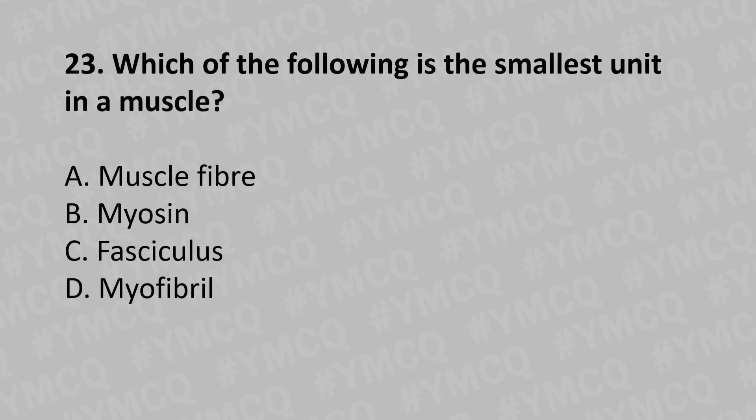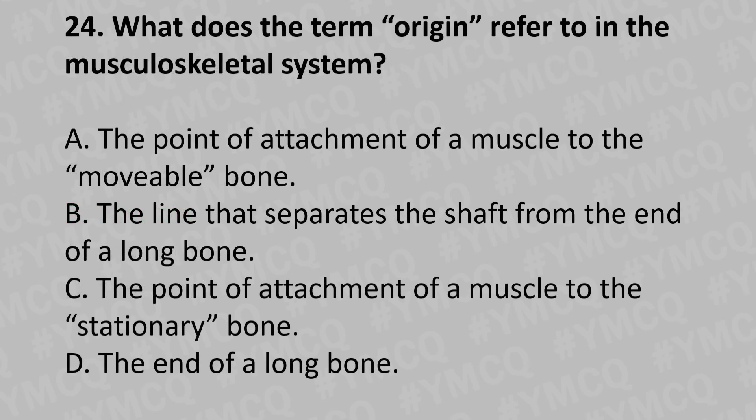Moving to our 23rd question: Which of the following is the smallest unit in a muscle? Option A: muscle fiber, Option B: myosin, Option C: fascia, Option D: myofibrils. The answer is Option B: myosin.